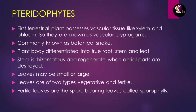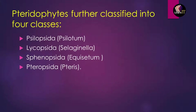In the next segment we'll talk about the classification of Pteridophytes into four types. These four categories are: Psilopsida, Lycopsida, Sphenopsida, and Pteropsida.